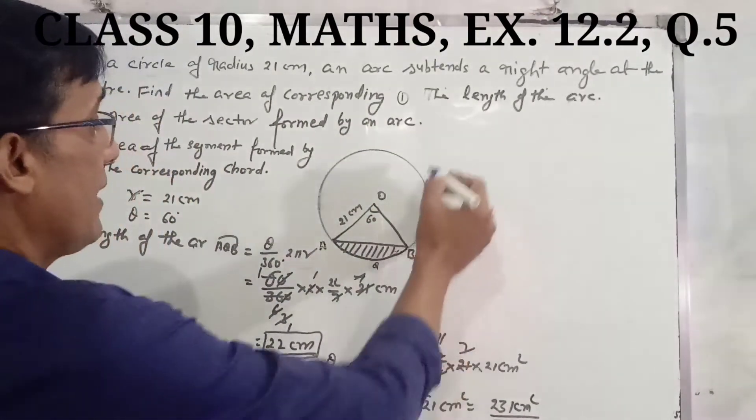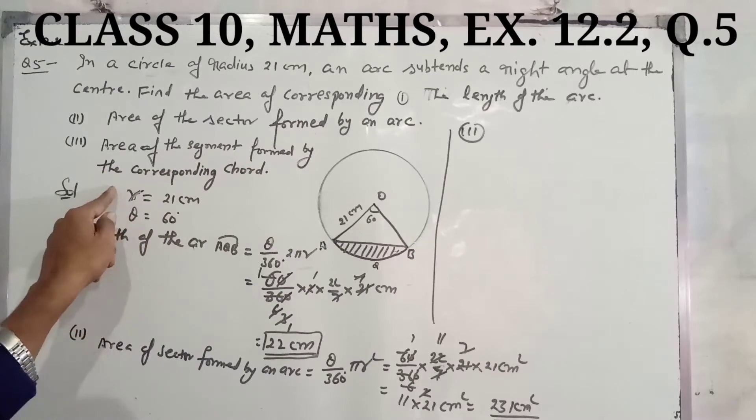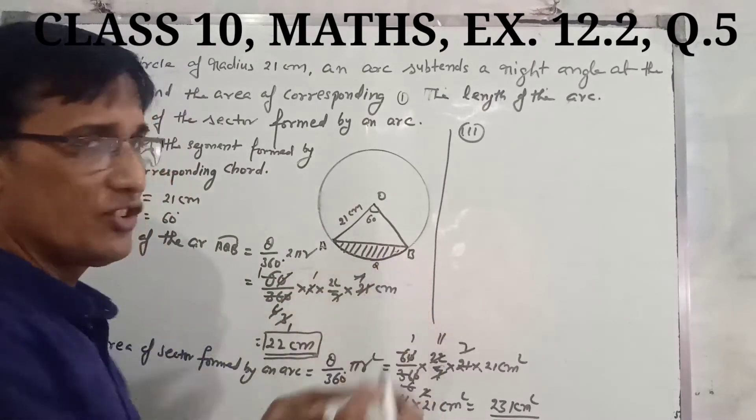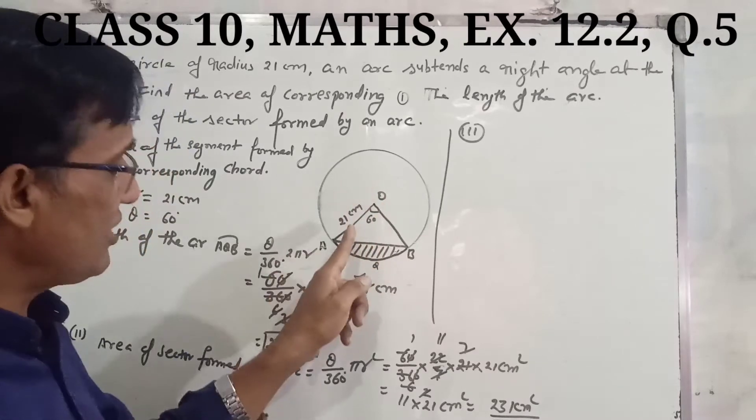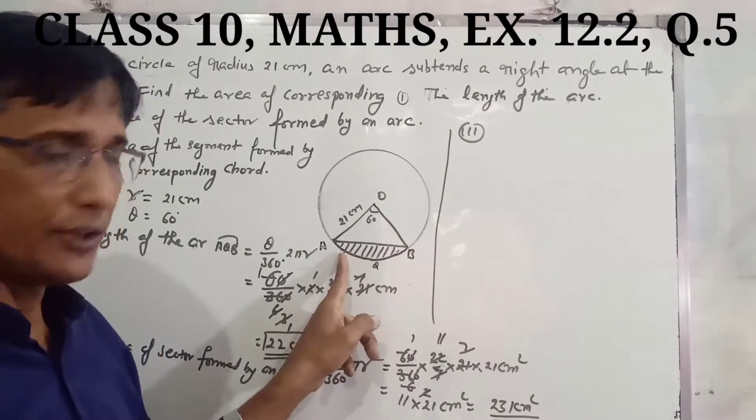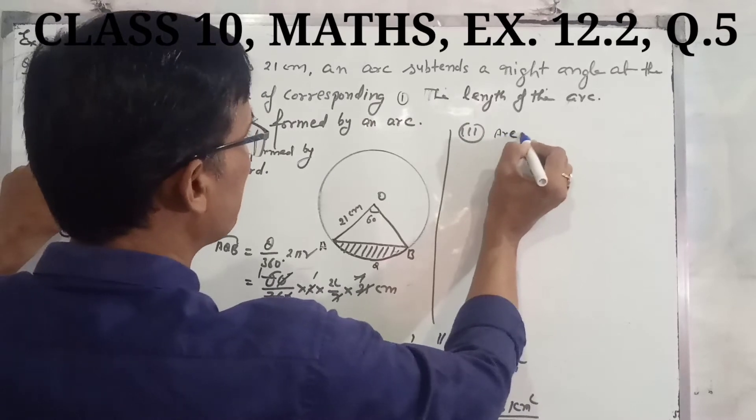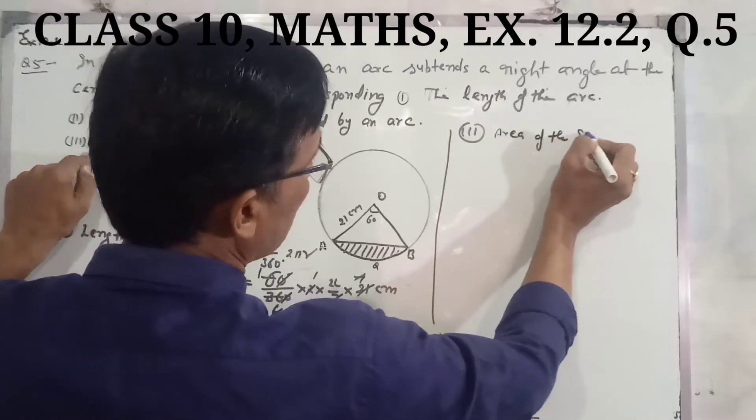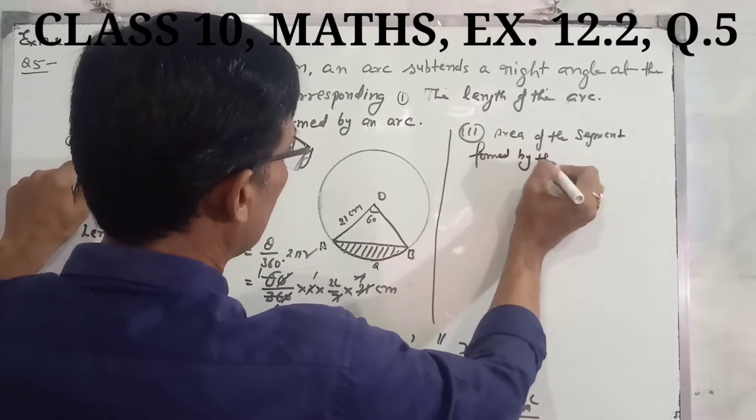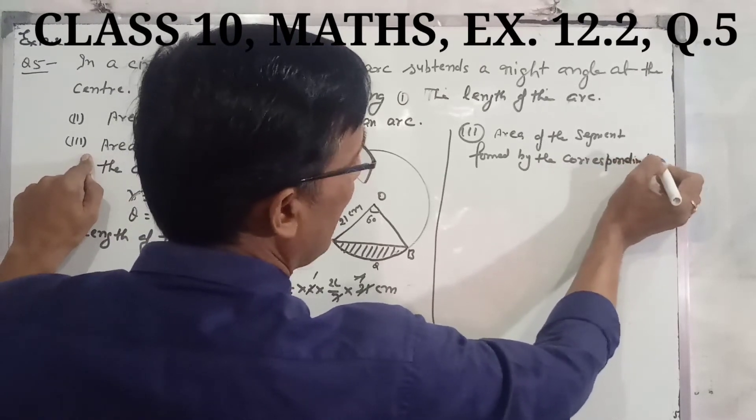Third point: area of the segment formed by the corresponding chord. The segment is the area between the chord and the arc. When you subtract the triangle from the sector, this shaded region is the segment.